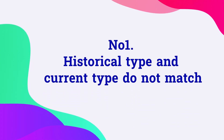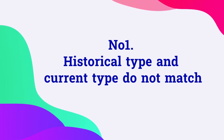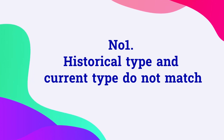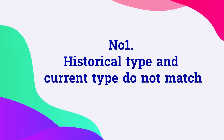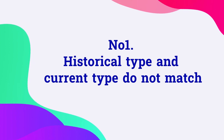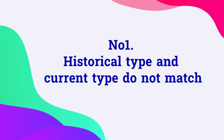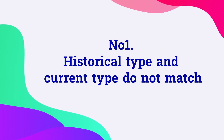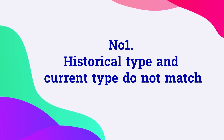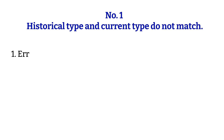Number one: historical type and current type do not match. It's common knowledge that our blood types do not just change out of the blue — they don't change without a reason. But there are a few conditions that could change our blood types. Take a few minutes to write down those conditions, and what do you do when the current specimen blood type and historical blood type do not match? I'll give you a few moments to list the possibilities. You can pause the video. Time's up! Let's see if your answer matches what I have.